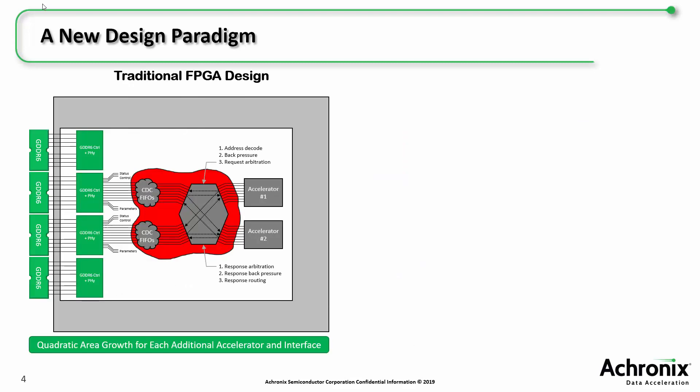Let's look at what a design normally requires in a traditional FPGA without a Network on Chip. Say, for example, you want to design two hardware accelerators in your FPGA to talk to GDDR6 memories. Along with the logic for the hardware accelerators, a user also needs to design crossbar logic to handle address decoding, flow control, and transaction arbitration. Additionally, the user will need to design any clock domain crossing FIFOs and the logic needed to talk to the GDDR6 controllers in PHY.